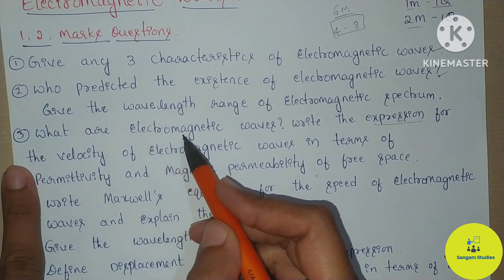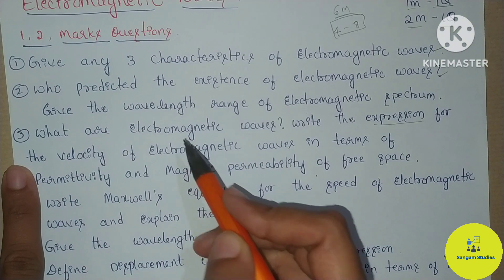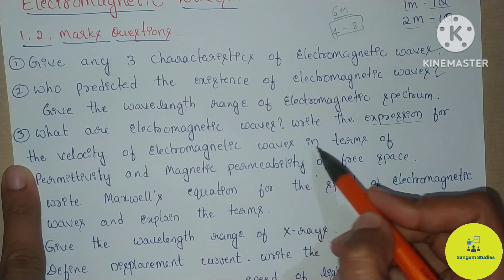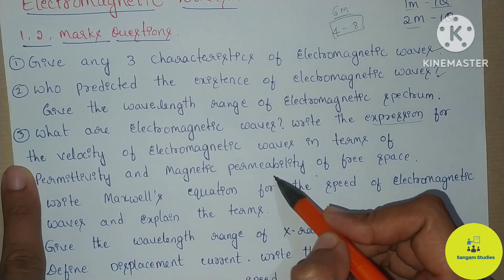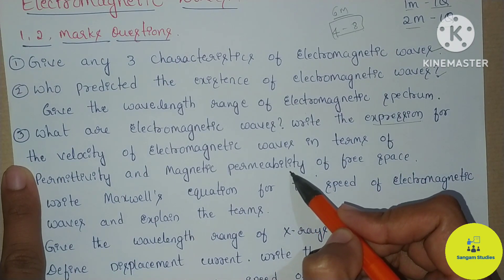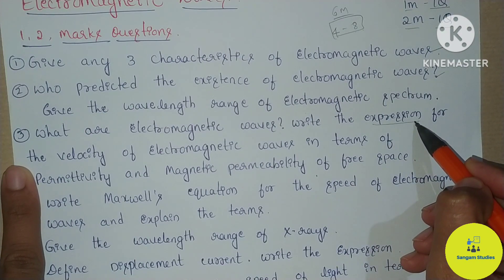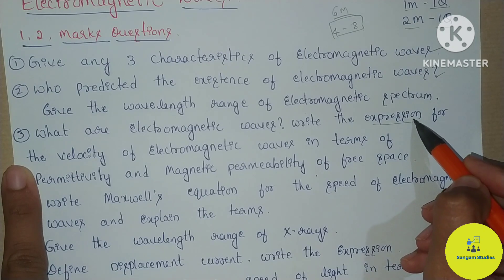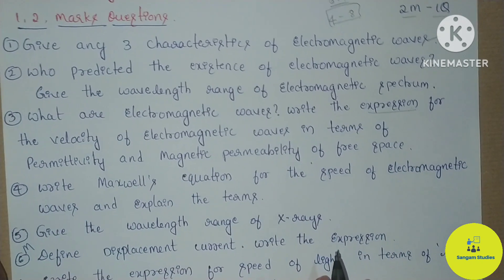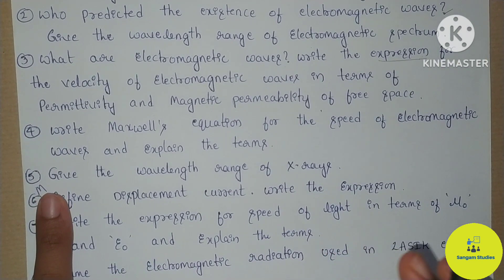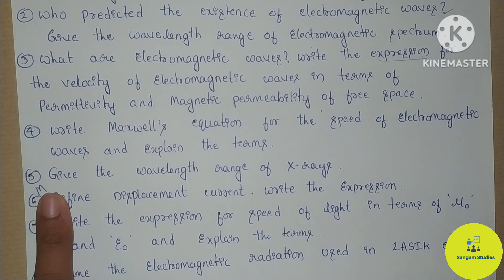Third question: electromagnetic waves — write the expression for the velocity of electromagnetic waves in terms of permittivity and magnetic permeability of free space. You can use these terms. Fourth question: Maxwell's equation for the speed of electromagnetic waves and explain the terms. You can use Maxwell's equations and these terms.